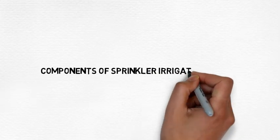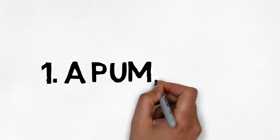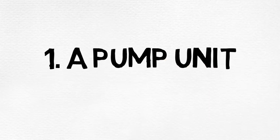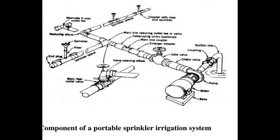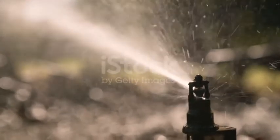Components of a sprinkler irrigation system. Pumping unit: Sprinkler irrigation systems distribute water by spraying it over the fields. The water is pumped under pressure to the field, and the pressure forces the water through sprinklers or through perforations or nozzles in pipelines.